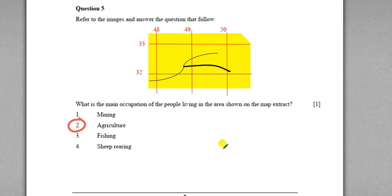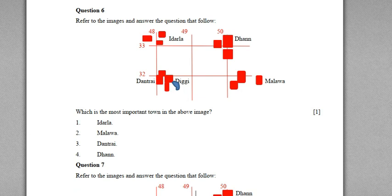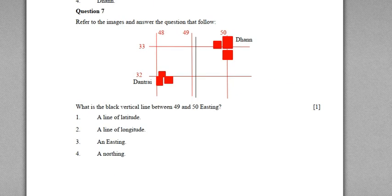The same kind of diagram shows two or three settlements with names given. The question is: which is the most important town in the above image? Most important means the settlement with the greatest number of facilities. Here we have only buildings and one other facility. Looking at Thentri, it has four separate buildings and a digi — a small human-made tank. That village has more facilities than all the other towns, so the correct answer is option three: Thentri.